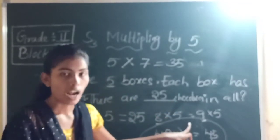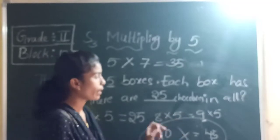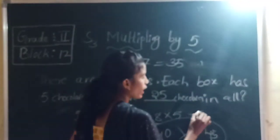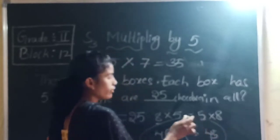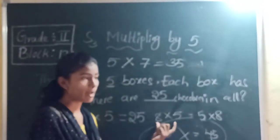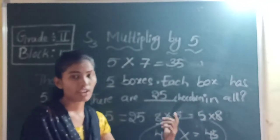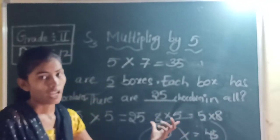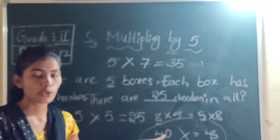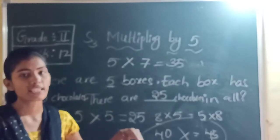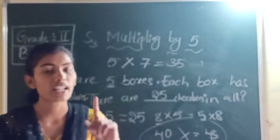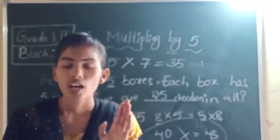Next, say true or false: 8 into 5 is the same as 5 into 9. Find both answers. 8 into 5 equals 40 and 9 into 5 equals 45. The answers are not the same. If you have the same numbers being multiplied, both will be the same because you are just flipping the order.